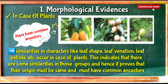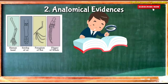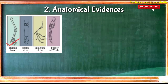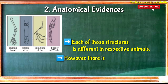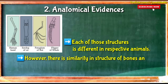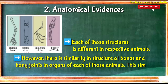Now moving towards the next evidence — anatomical evidences. If you carefully observe the pictures, there doesn't seem any superficial similarity between the human hand, foreleg of ox, flipper of whale, and pterygium of bat. The use of each of those structures is different in respective animals. However, there is a similarity in structure of bones and bony joints in the organs of each of those animals, and this similarity indicates that those animals may have a common ancestor.